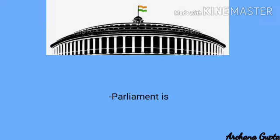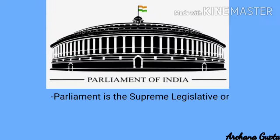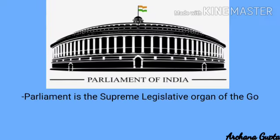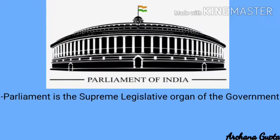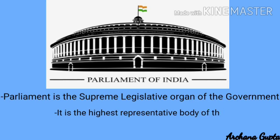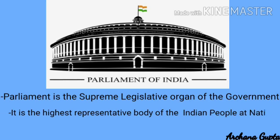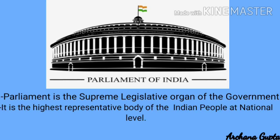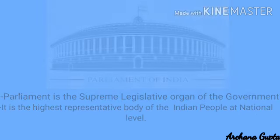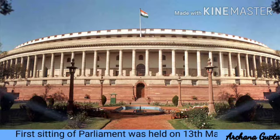Parliament is the supreme legislative organ of the government, meaning it has the authority to make or change laws. It is the highest representative body of the Indian people at the national level. The first sitting of the Parliament was held on 13th May 1952.